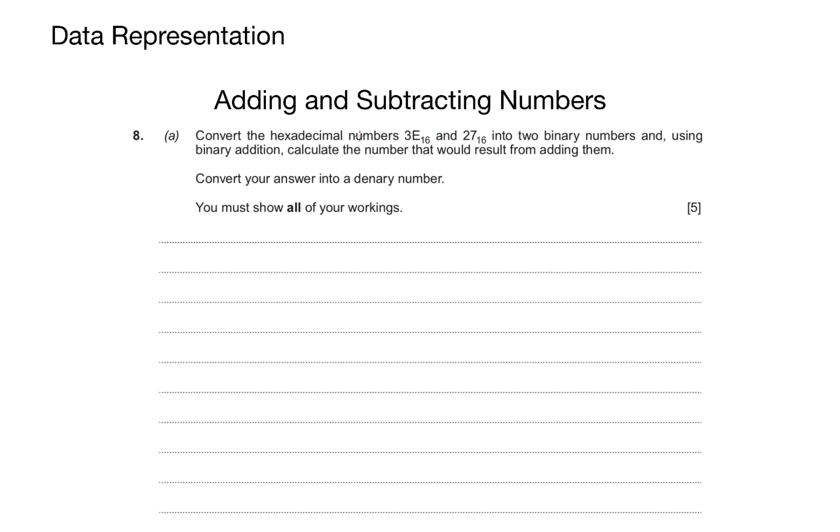This is the other type of question that you'll get. Convert the hexadecimal numbers 3E and 27 into binary numbers, and using binary addition, calculate the number that would result from adding them.